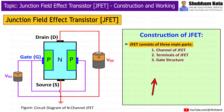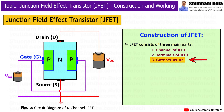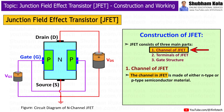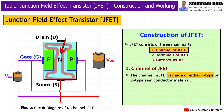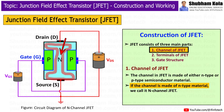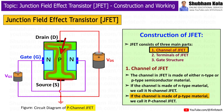The JFET consists of three main parts: the channel, the terminals, and the gate structure. The channel in a JFET is made of either N-type or P-type semiconductor material. If the channel is made of N-type material, we call it an N-channel JFET. If it is made of P-type material, we call it a P-channel JFET.